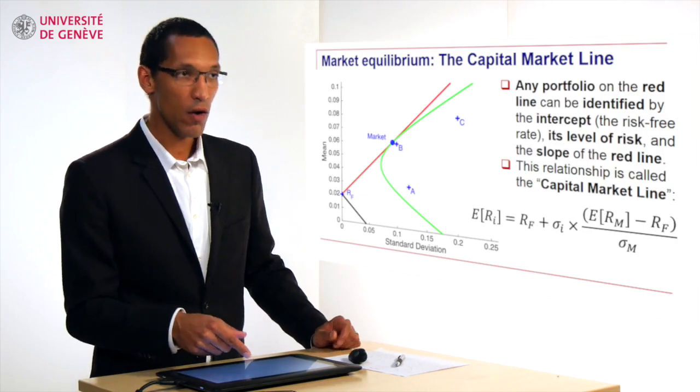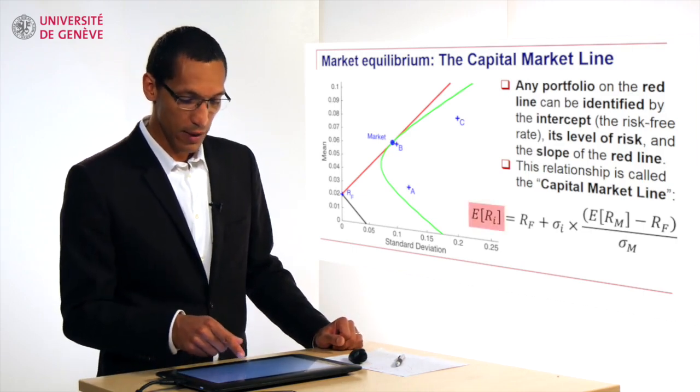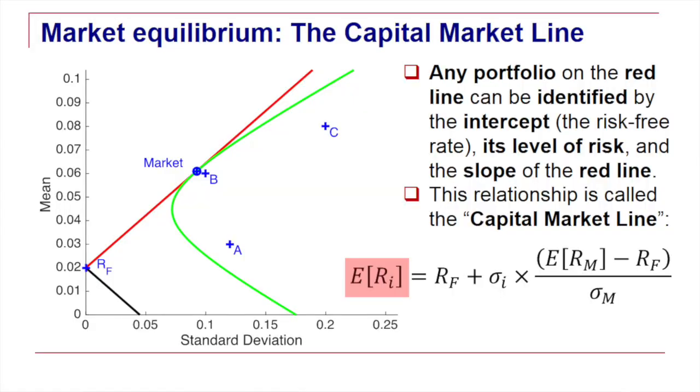The expected return here of one particular efficient portfolio, which we write E for expectation of RI, the return of one particular efficient portfolio, so one portfolio on the red line, satisfies the equation of the straight line. This straight line starts at the risk free rate which we write here RF.